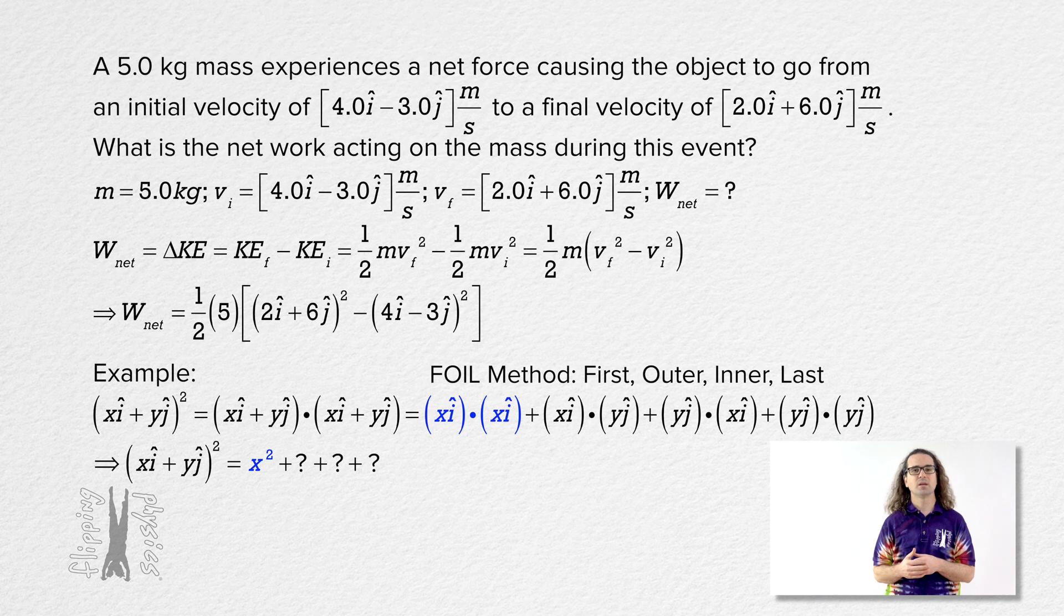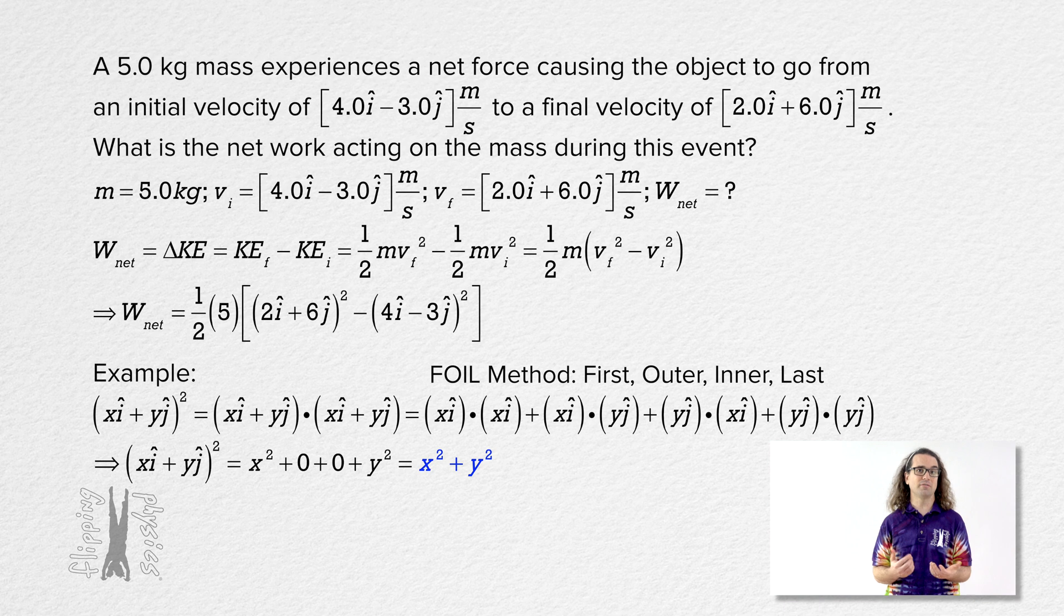The dot product of anything i and anything j is just zero because the directions of i and j are perpendicular to one another. And the dot product of yj and yj is just y squared, again because unit vector j and j are in the same direction. So this works out to be that we just square each of the unit vector coefficients. However, it is important to realize why that is.